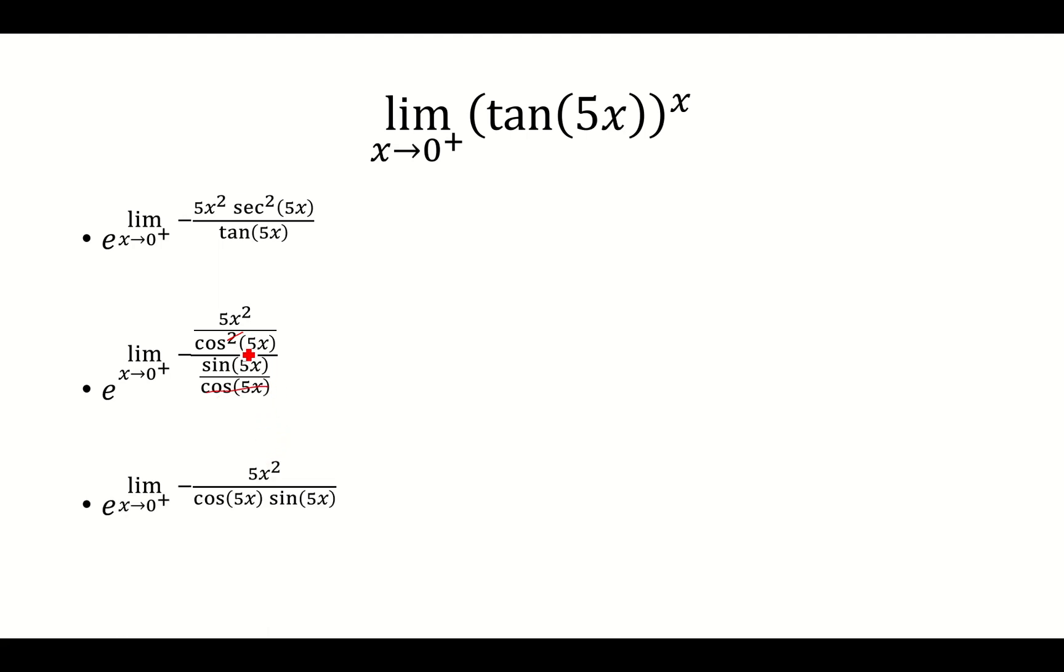And I'm left with negative 5x squared over cosine 5x times sine 5x, which I can factor out the negative 1 over cosine 5x here. Or I guess separate this, not factor. Separate it under two limits using the product rule.